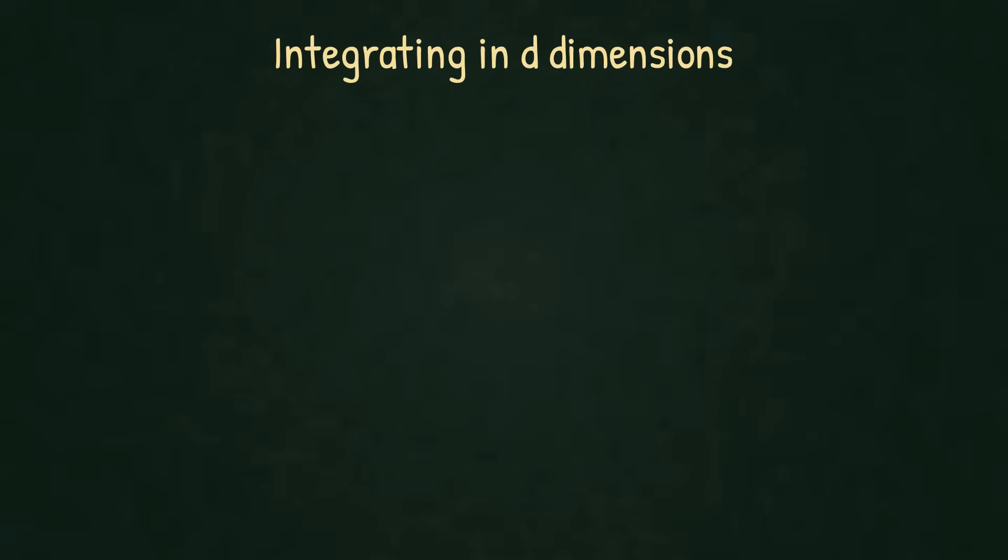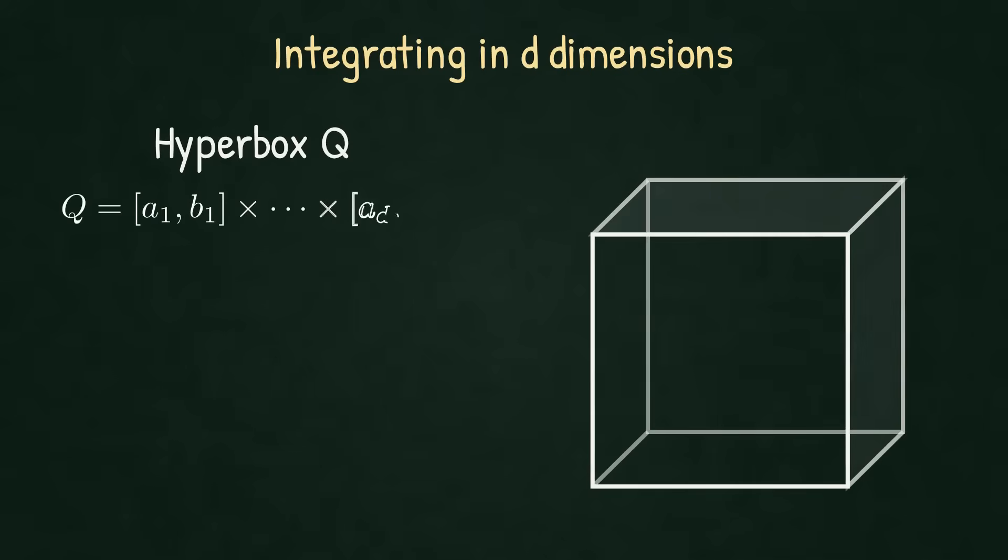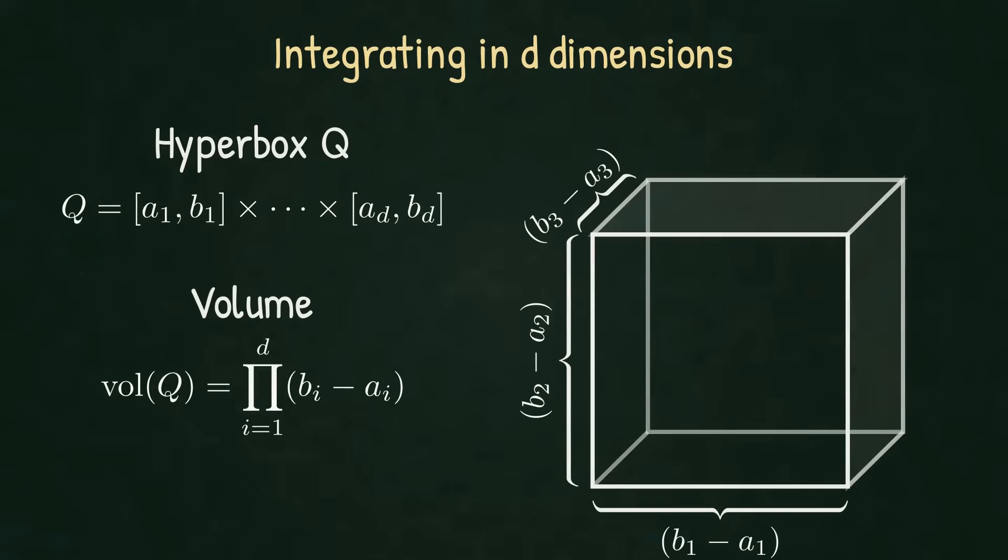So, we are leaving the line and moving into multi-dimensions. Our basic domain is now a hyperbox. On the line, the only geometric number we needed was length. Here, the analog is volume. You can think of each factor as one edge length of the box.